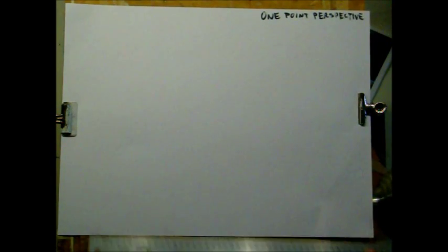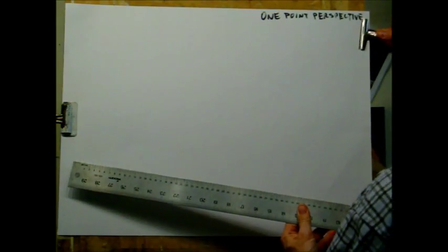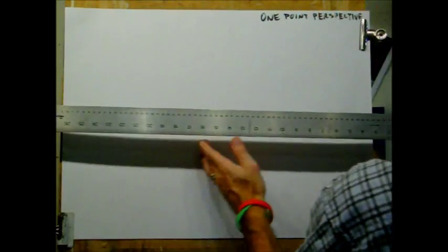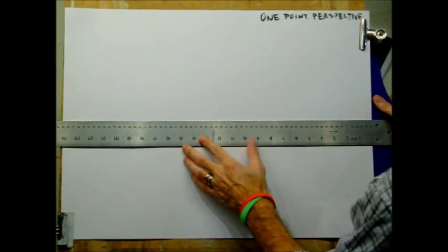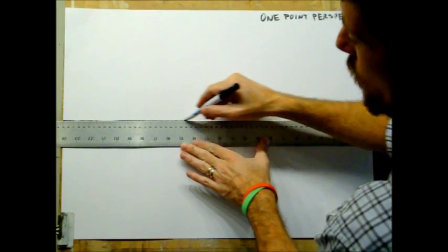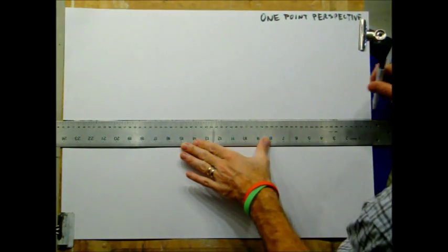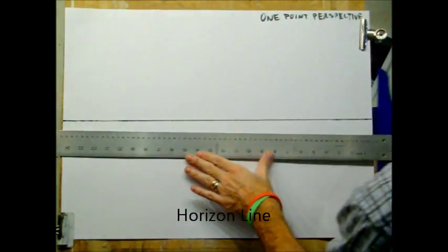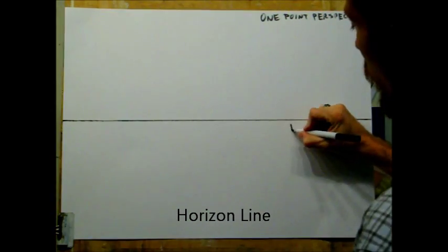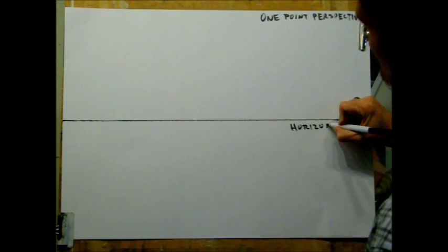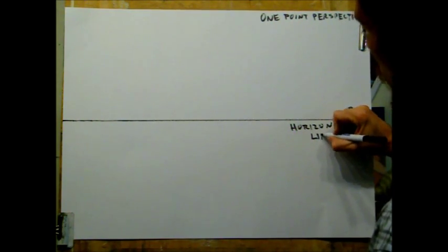This is linear perspective. To start with, we're going to have to draw out a horizon line. This is the line where the sky meets the earth. In this case, it's where my ruler divides it about halfway on the page. So this is my horizon line. Go ahead and label that horizon line.